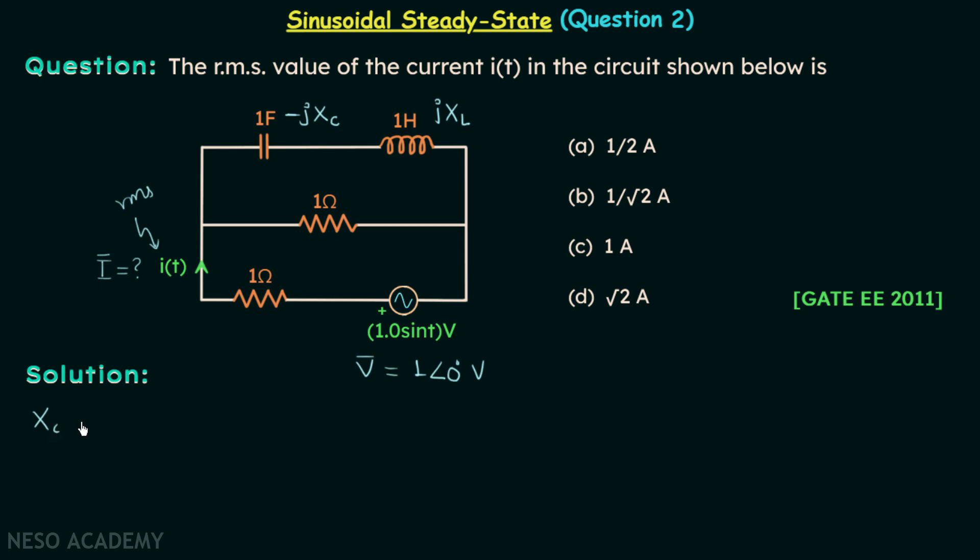Let's find out xc. We know it is equal to 1 over omega c. From here we can see that omega is equal to 1 and c is also 1.